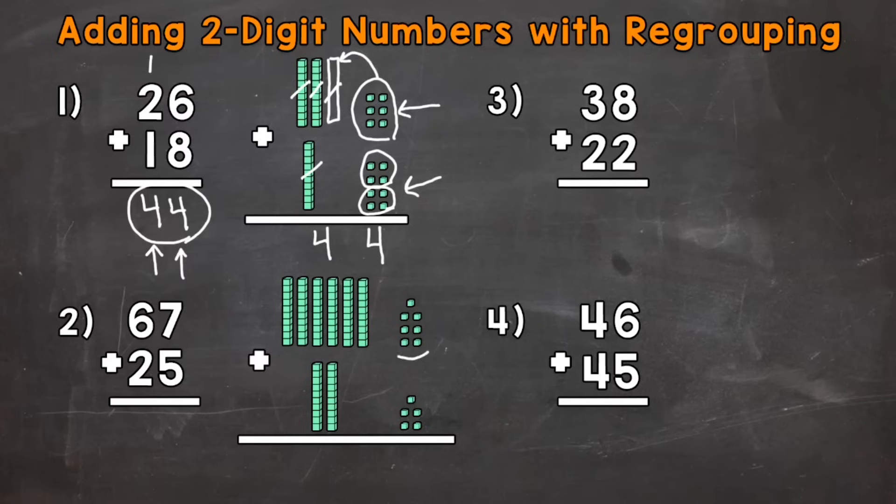So 7 ones plus 3 ones gives us a group of 10 that we can regroup to the tens place. So let's regroup, bring that over to the tens, and we're left with two ones right here. So we have a 2 in the ones place.